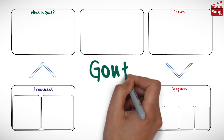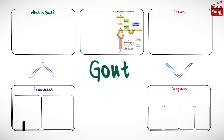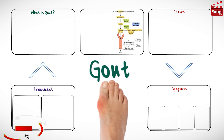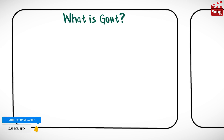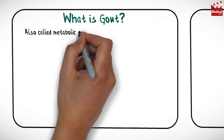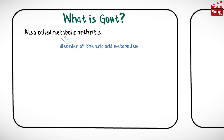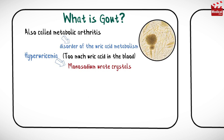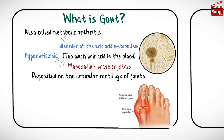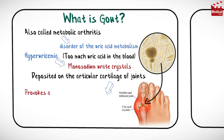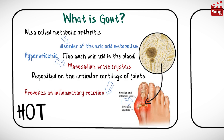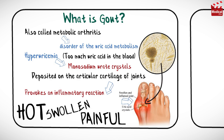In this video I'm going to discuss what is gout, what are the symptoms and causes of gout, and gout treatment. First, what is gout? Gout, also called metabolic arthritis, is a disease due to an inborn disorder of the uric acid metabolism. There is hyperuricemia, or too much uric acid in the blood, and this leads to monosodium urate crystals being deposited on the articular cartilage of joints, which provokes an inflammatory reaction causing the joint to become hot, swollen, and painful.